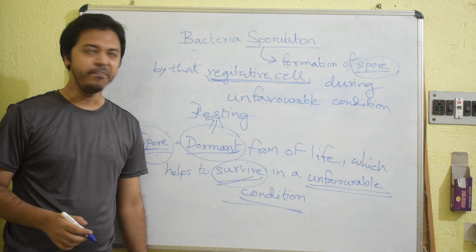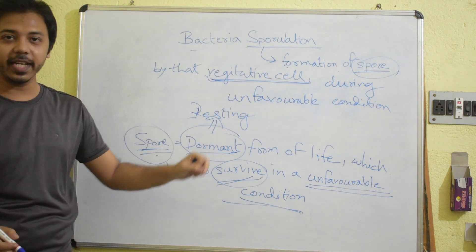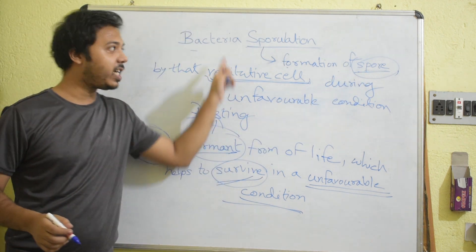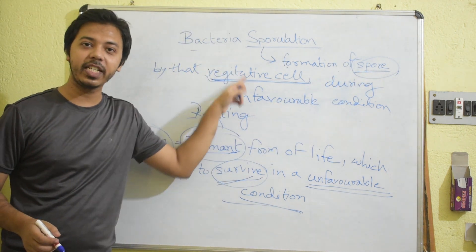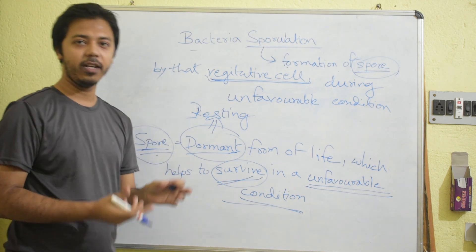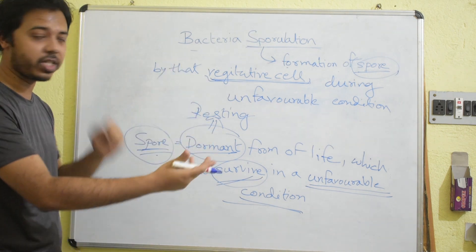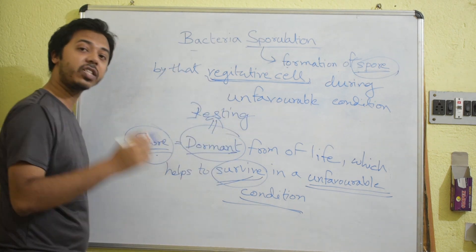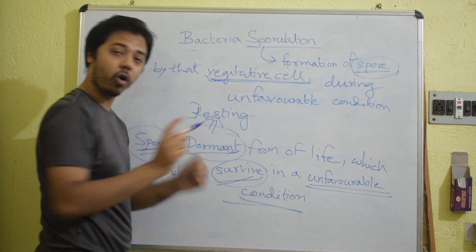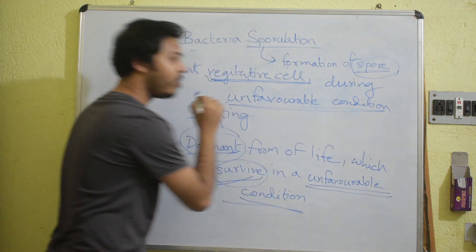This is called bacterial sporulation. The sporulation is the formation of a spore by that vegetative cell. It is called vegetative cell because in normal times it can divide from one cell into two cells and division will continue. That state is called the vegetative cell. The vegetative cell will produce a spore when it is under an unfavorable condition.